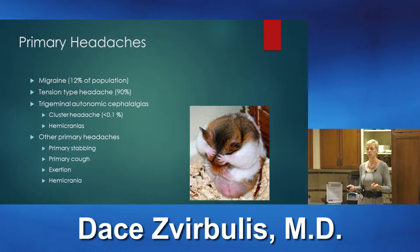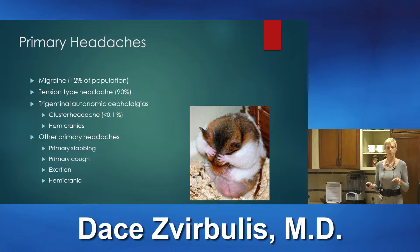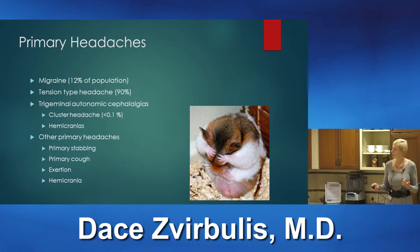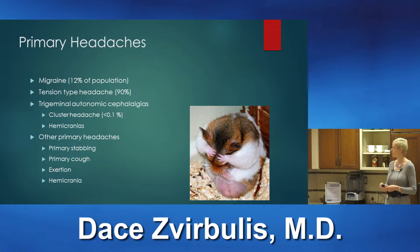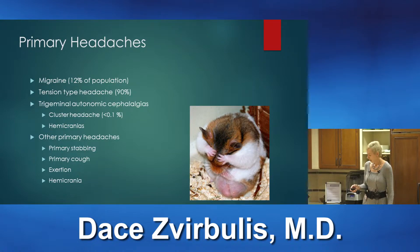Then we have what's called trigeminal autonomic cephalalgias, with subtypes including cluster headache and hemicrania-type headaches. These are not very common — actually very rare — and not all physicians know about them. But if we can distinguish these headaches, we can certainly help because treatment is a little bit different. There are also primary stabbing or so-called ice pick headaches, primary cough, exertion and exercise headaches, and some other less common subtypes.